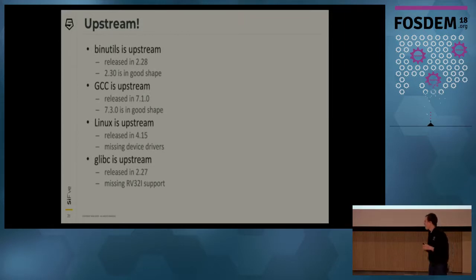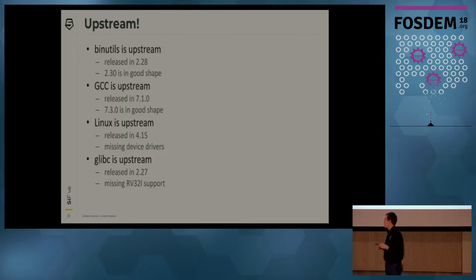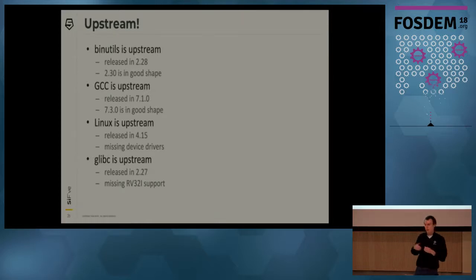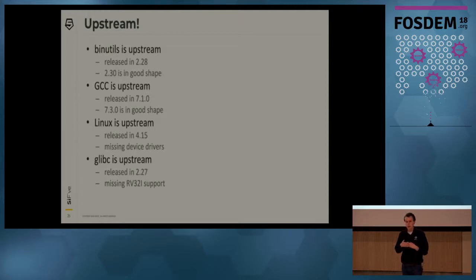glibc was very recently released — 2.27 came out on February 1st. The RV64 64-bit support is largely there, but RV32 32-bit ISA support is not in the upstream port yet. We have it out-of-tree; we just didn't have time to get it properly bug-fixed, and we wanted to make sure that what we submitted was stable and ready to use.